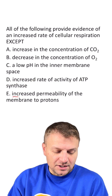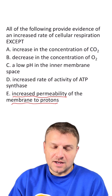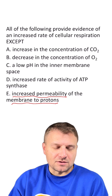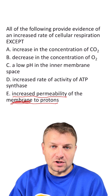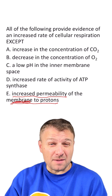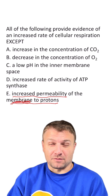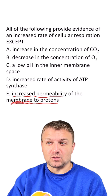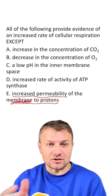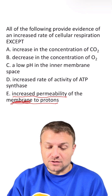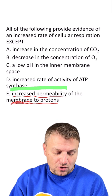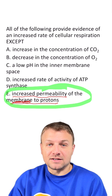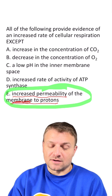E: increased permeability of the membrane to protons. That doesn't sound right — that's not going to occur with increased cellular respiration, and it would actually stop ATP from being produced because it would even out the proton concentrations in the mitochondria. So E is the right choice here.